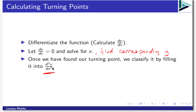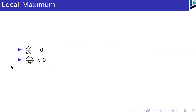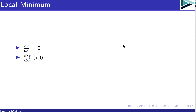To classify the turning point, substitute the x-value into the second derivative d²y/dx² to determine whether it's a max or a min. If the second derivative is less than zero, you're dealing with a local maximum. If the second derivative is greater than zero, it's a local minimum. Let's see this with an example.